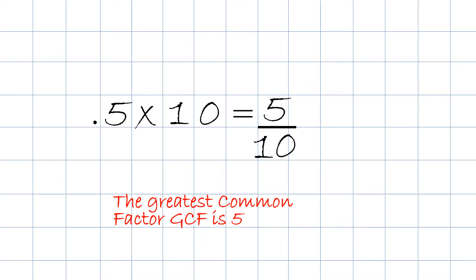We take the top number, the numerator, 5 divided by 5 will equal 1. And the denominator, number 10, we also divide it by 5 and the answer will be 2. So, 0.5, how do we make 0.5 into a fraction? It's going to be half.